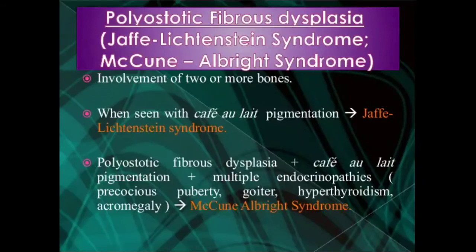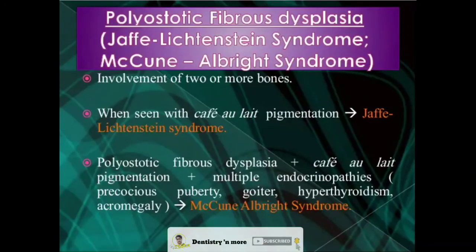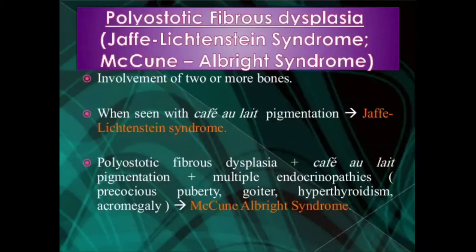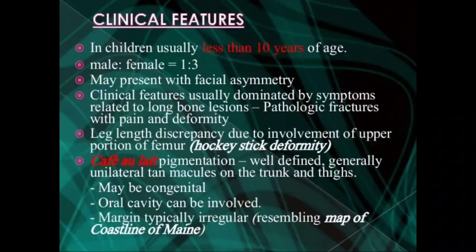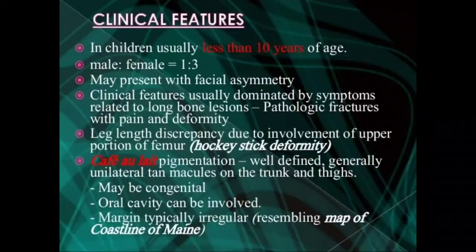In the polyostotic form — Jaffe type or McCune-Albright syndrome — the Jaffe type is accompanied by café au lait pigmentation. McCune-Albright syndrome comprises café au lait pigmentation, polyostatic fibrous dysplasia, and multiple endocrinopathies such as precocious puberty, goiter, hyperthyroidism, and acromegaly. Children less than 10 years of age are affected, with a male to female ratio of 1:3 — more female predilection. There is facial asymmetry, pathological fractures with pain and deformity, and a hockey stick deformity along the upper portion of the femur.